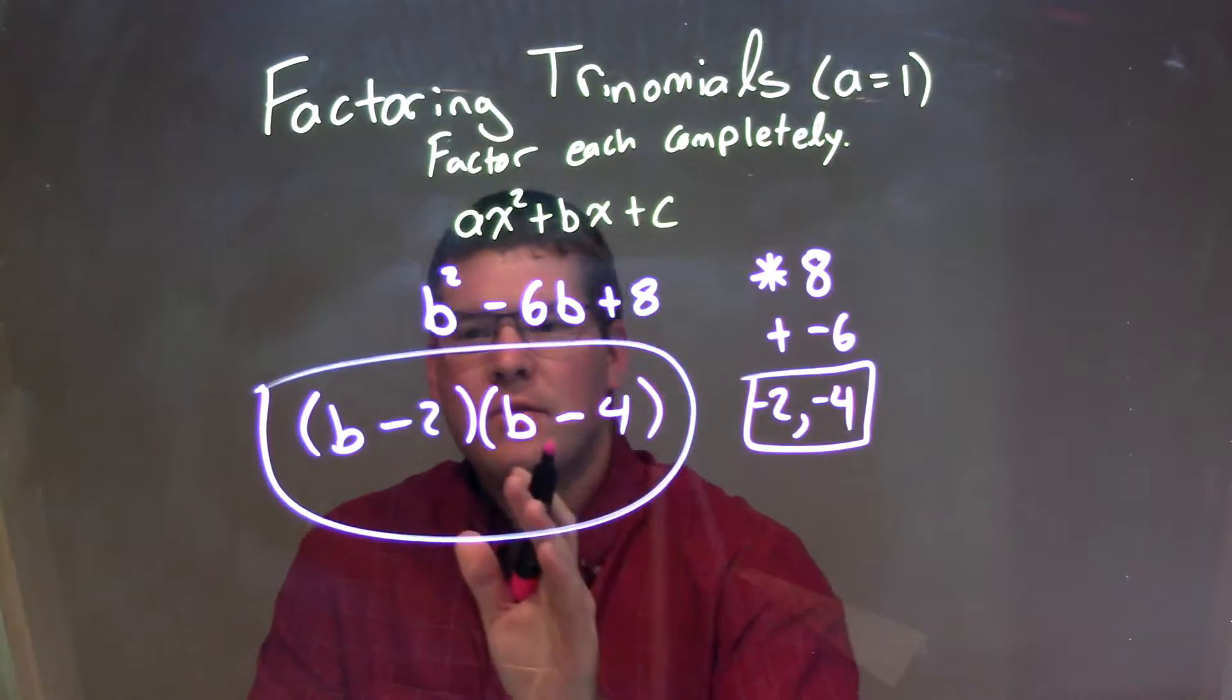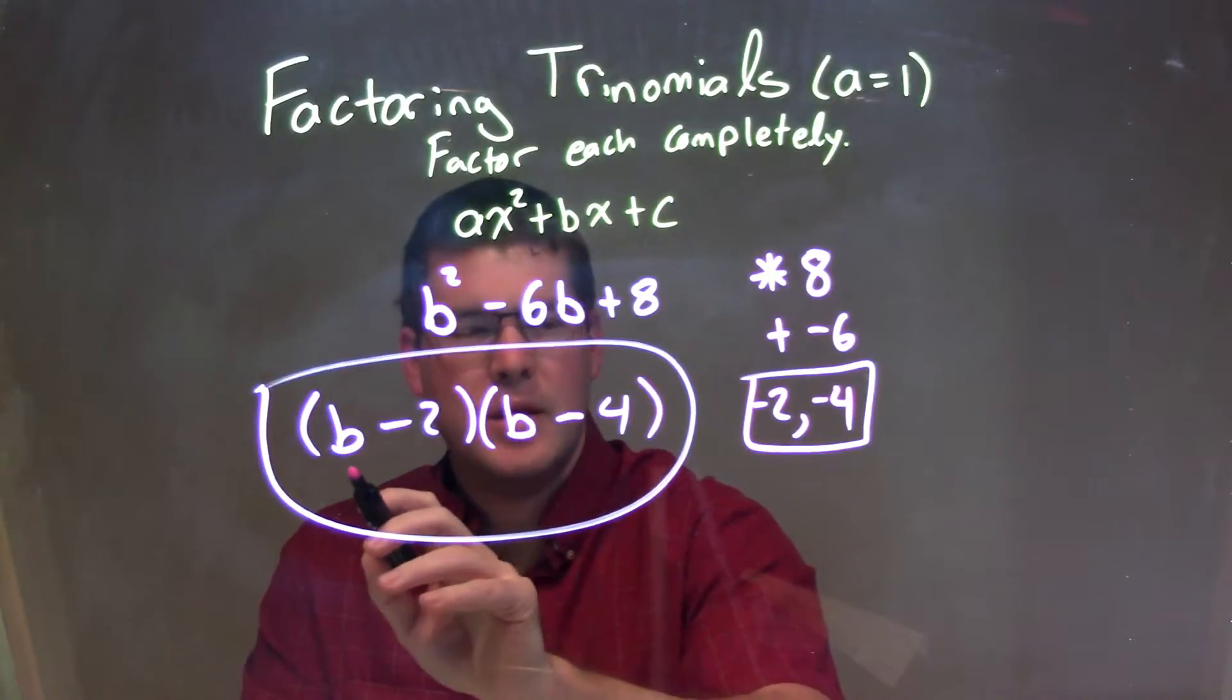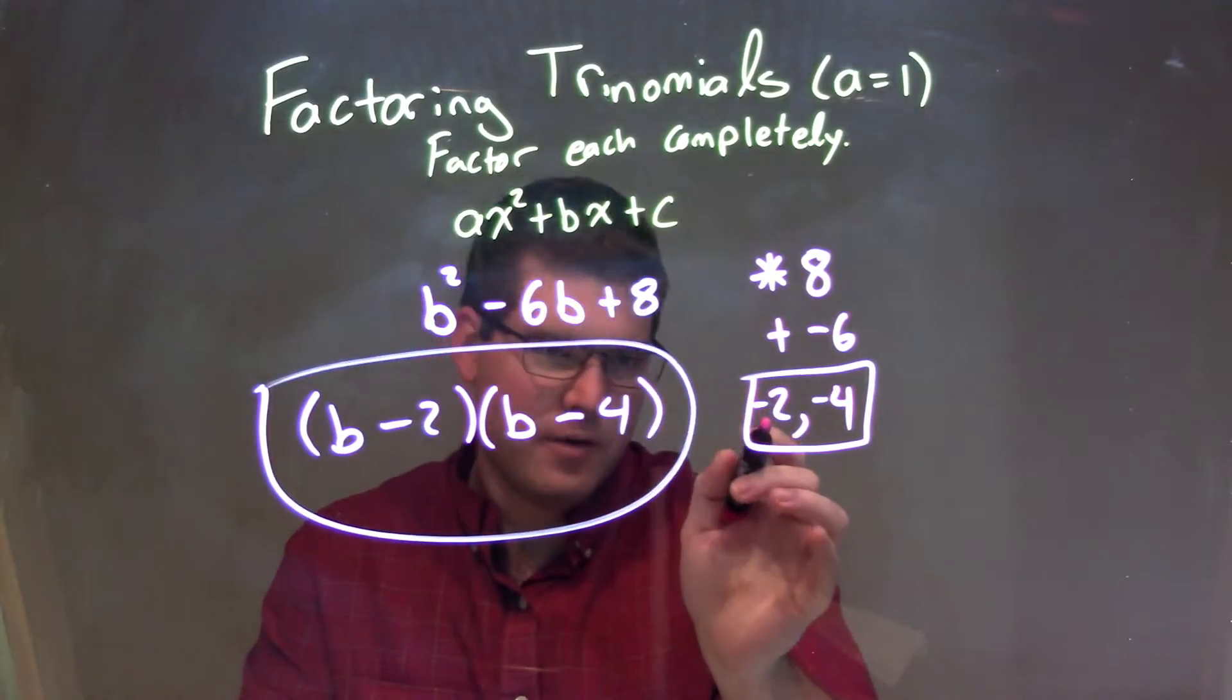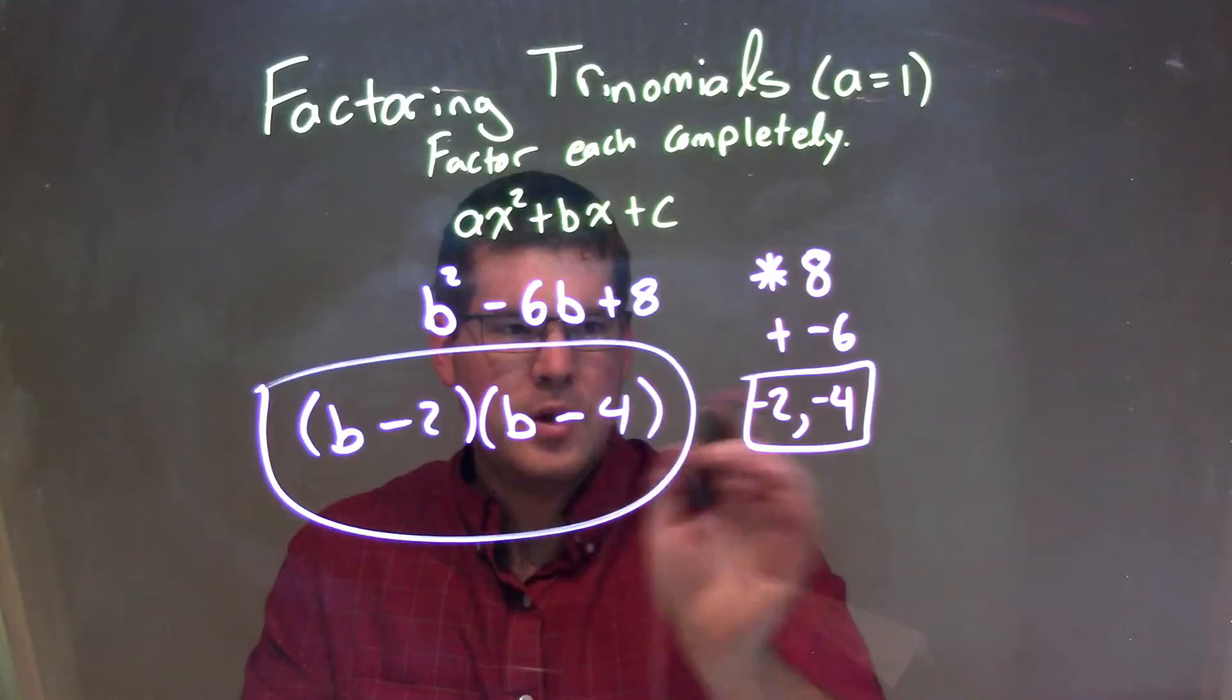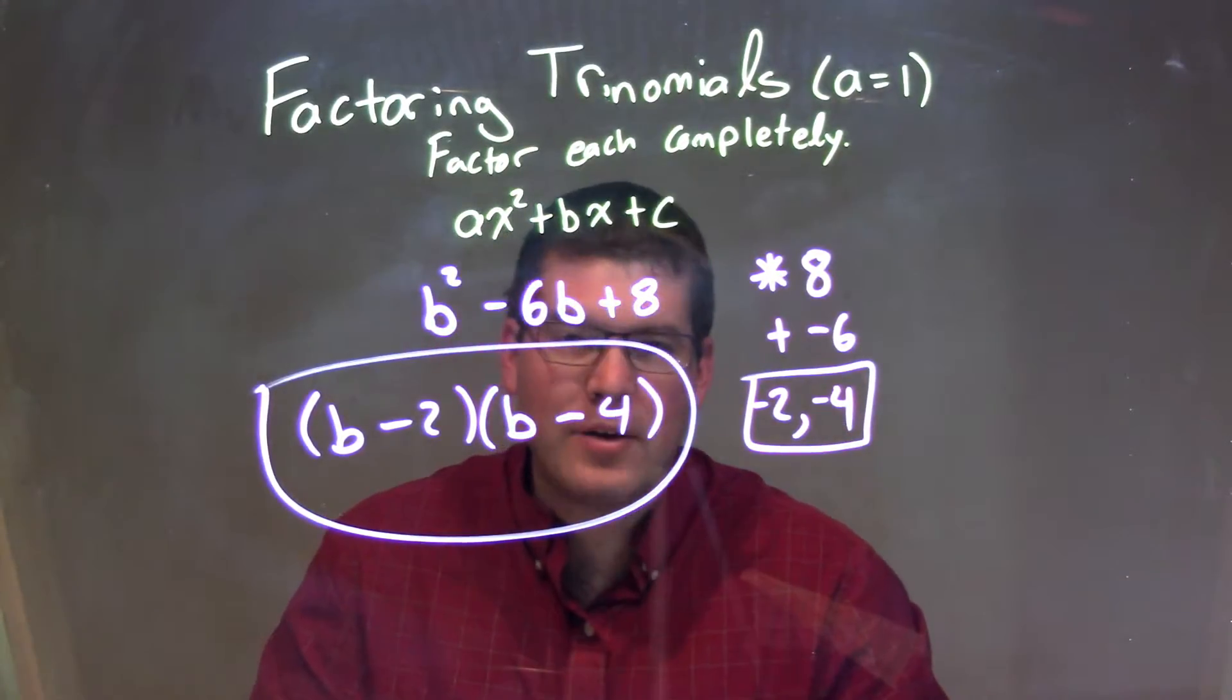So we write this in factored form. We have our two parentheses here. It'd be b, then our first number minus 2, times b, our second number minus 4, and that is our final factored trinomial.